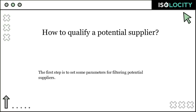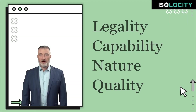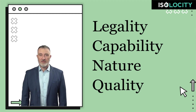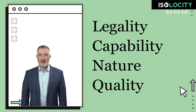The first step is to set some parameters for filtering potential suppliers. You can use the following parameters: 1. Legality — do they abide by all the legal requirements for this job? 2. Capability — do they have the resources you will require, both human and equipment? 3. Nature — are they responsive to your requirements? Extra points for being environmentally friendly. 4. Quality — do they have the proper quality standards? If you use this filter, you will be able to get the list of your potential suppliers.